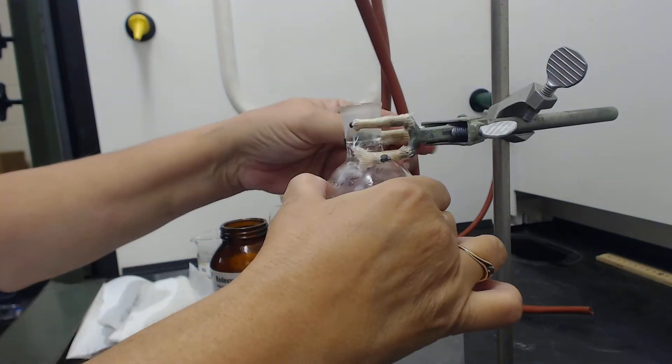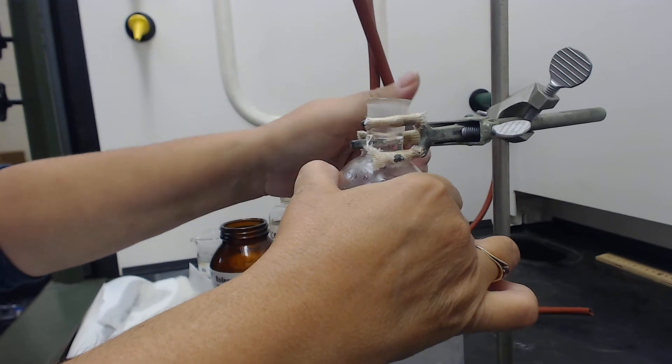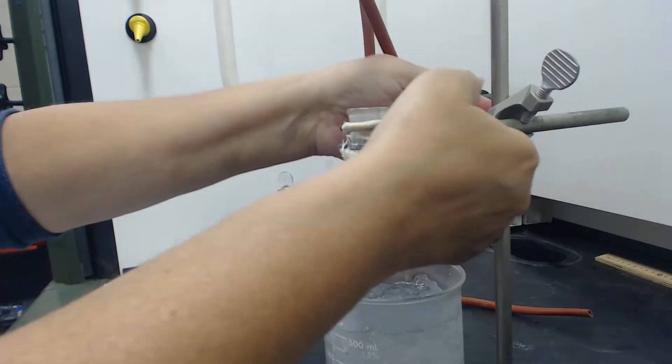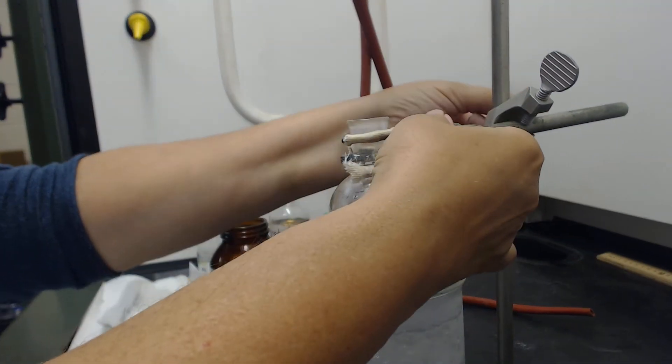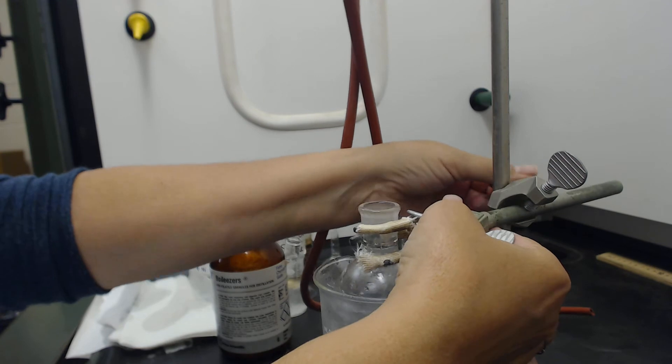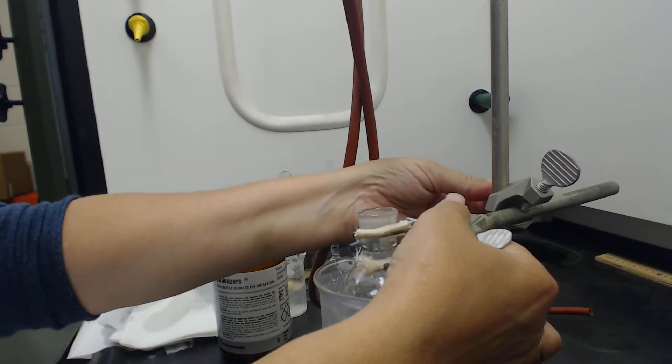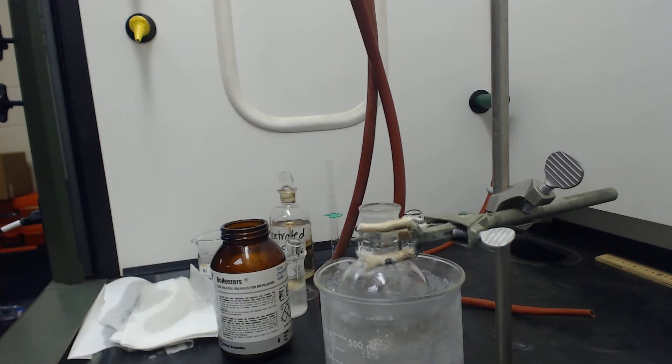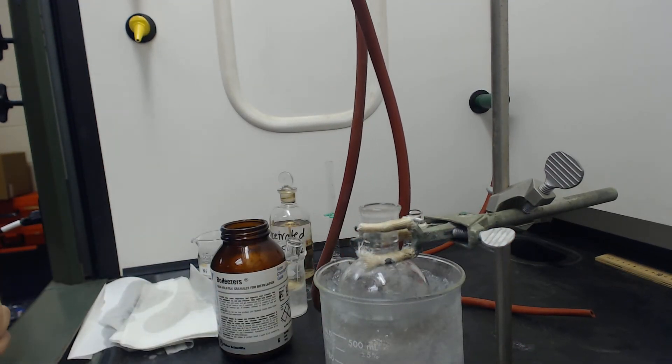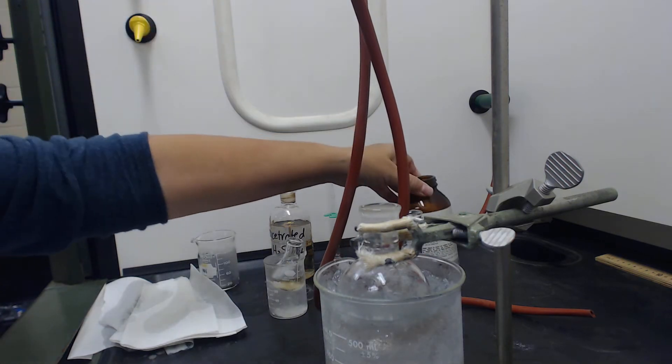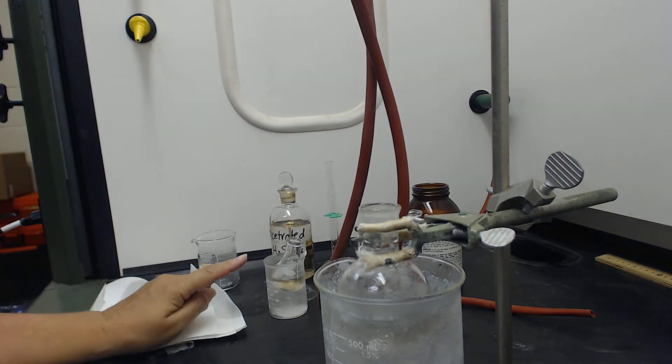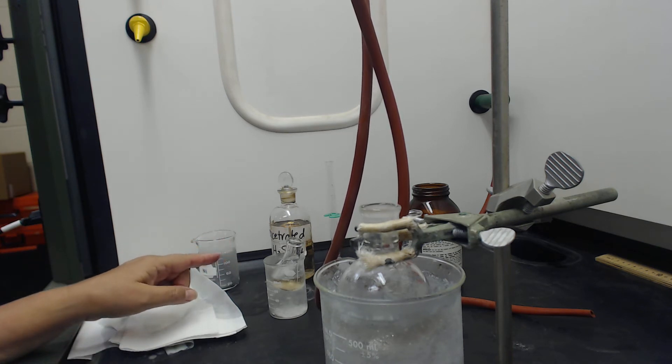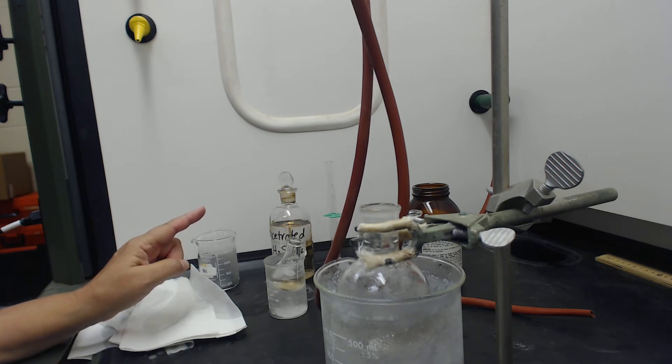Now what I'm going to do is put it into an ice bath. The reason why is because I'm going to add sulfuric acid. This is a pretty exothermic reaction when I add these together, so we want to make sure that it doesn't get too hot. I've already been cooling 11 mL of concentrated sulfuric acid in its own ice bath.